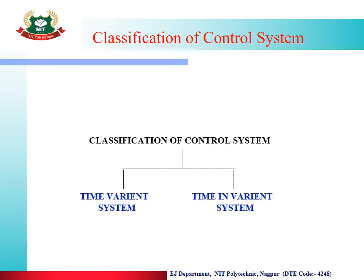Now the third classification of control system is based on time. The first type is time variant — where some parameters of the system change with time — and the next type is time invariant — where parameters do not change with time. We will understand these two systems one by one.